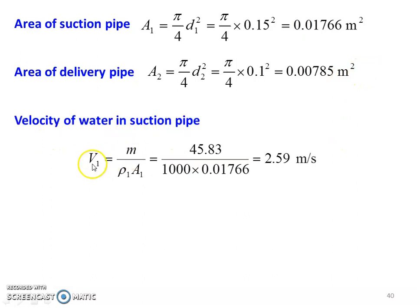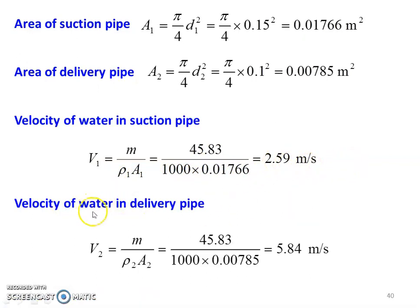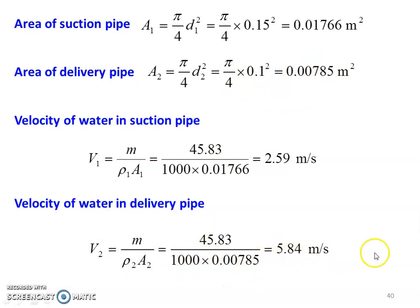Velocity of water at the suction pipe V1 = M / (ρ1 × A1) = 45.83 / (1000 × 0.01766) = 2.59 meters per second. Velocity of water in the delivery pipe V2 = M / (ρ2 × A2) = 45.83 / (1000 × 0.00785) = 5.84 meters per second.